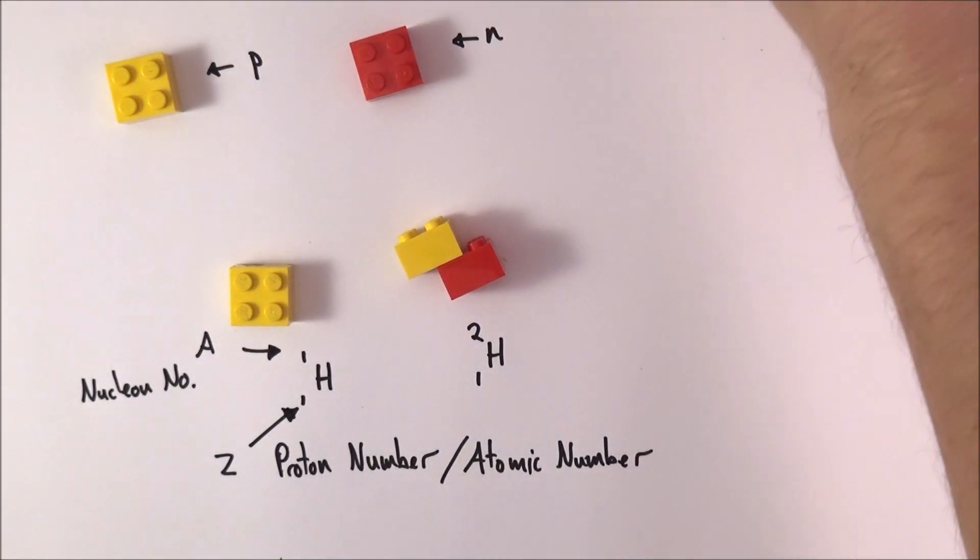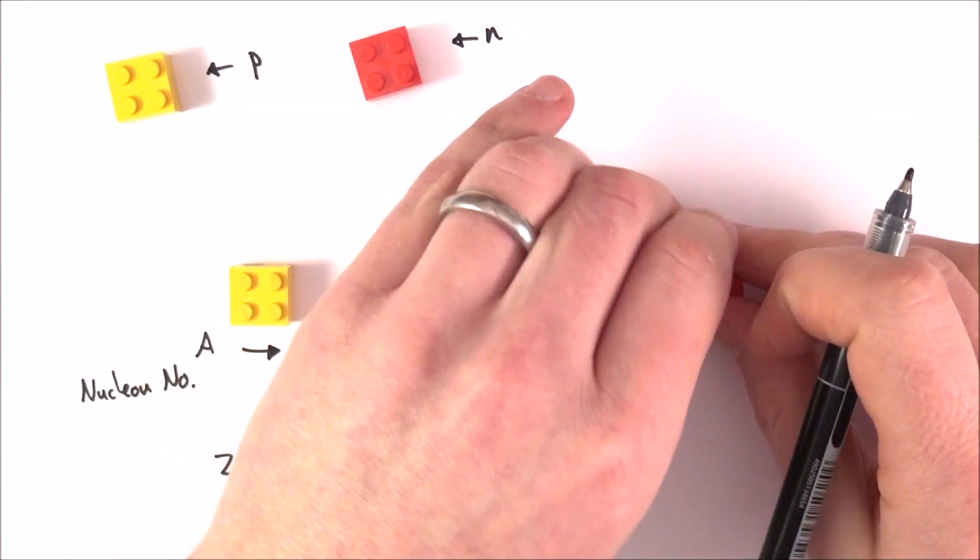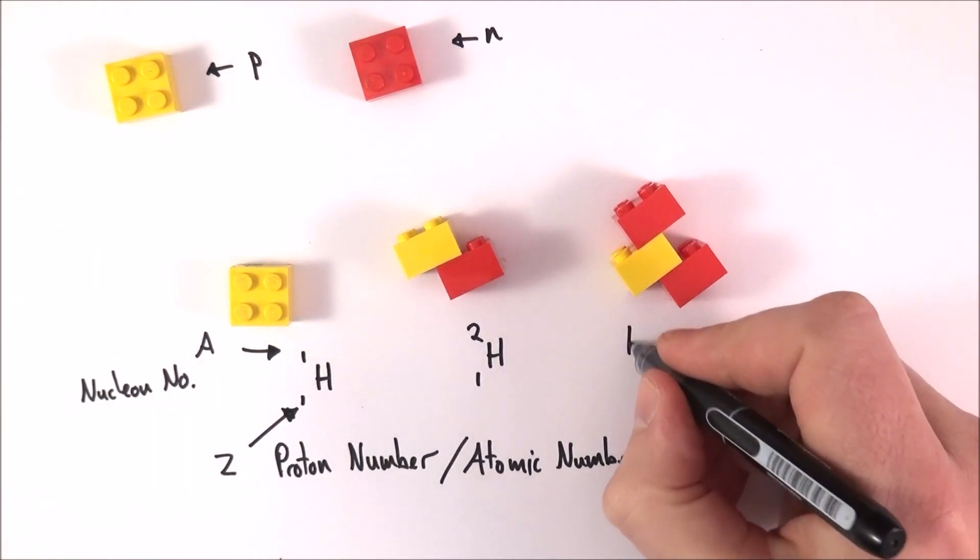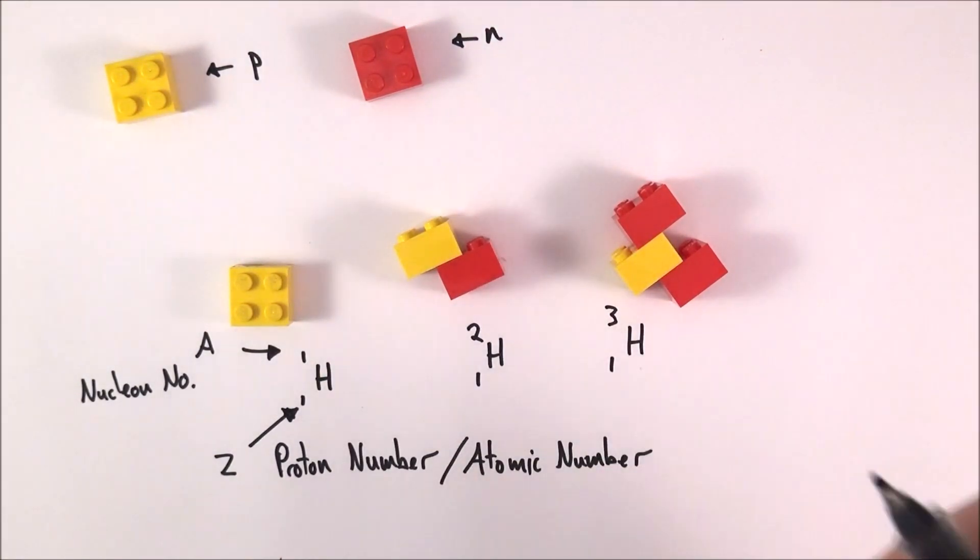There's a third kind of hydrogen that we have. Again, it must have one proton, but this one has two neutrons. We can represent that with this symbol here, and what we have now are different isotopes.